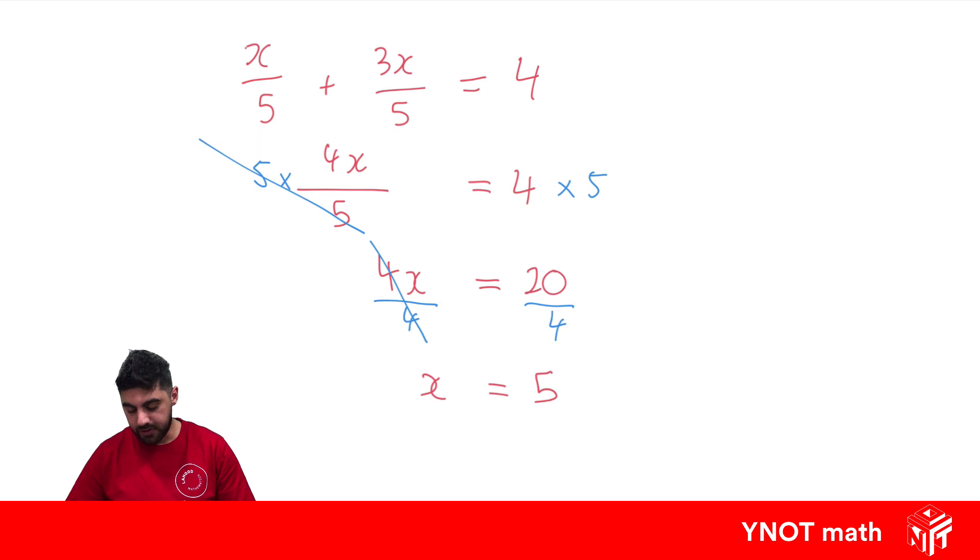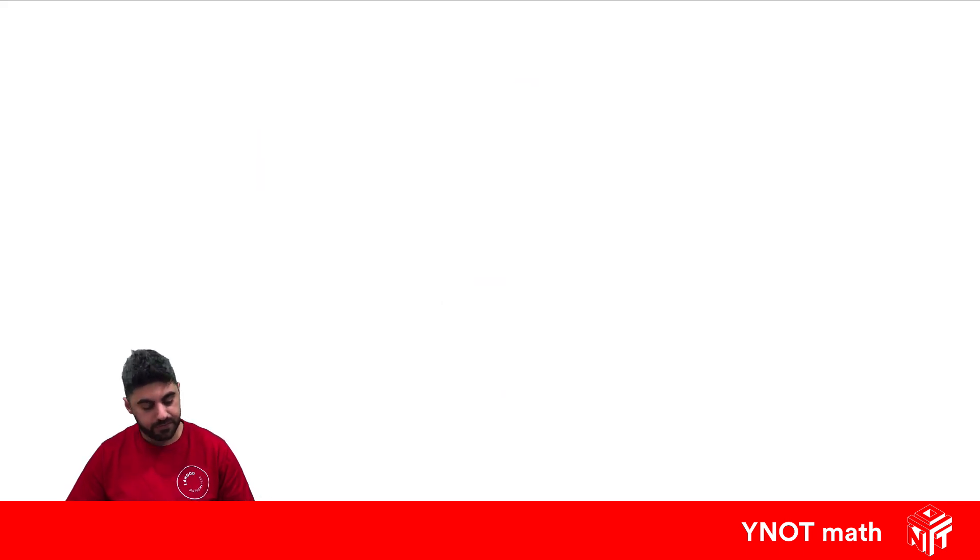All right, that was good when the denominators are the same, but what happens when they're different? So let's look at x over 3 plus x over 2 equals 10. Now I'm going to show you two methods on how you can solve this, but they both involve finding the lowest common multiple of the two denominators.